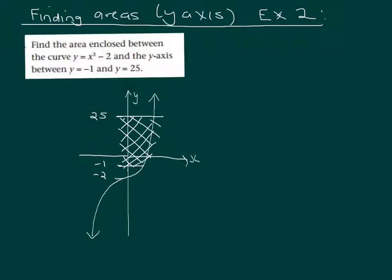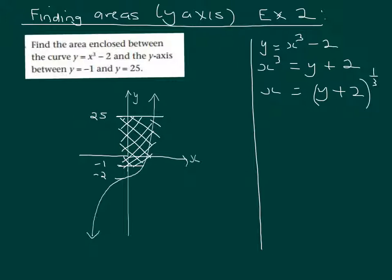Well there's no problem with that. That's just a straightforward area from minus 1 to 2.5, apart from the fact we need to make x the subject. So it's y equals x cubed minus 2. So x cubed if we get the x by itself, and the last step is to take the cube root.